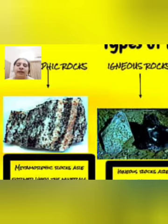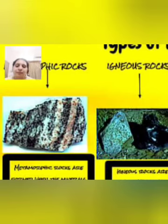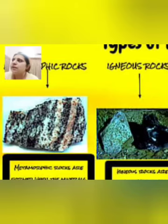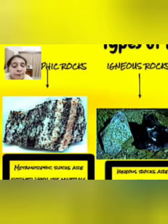Now let's talk about metamorphic rocks. They are formed when the minerals in the rocks are changed underground by heat and pressure. When minerals inside the earth are changed due to heat and pressure, we get metamorphic rocks.